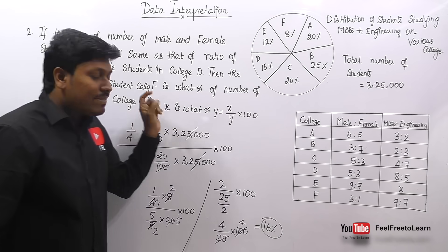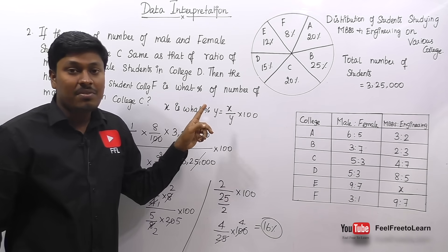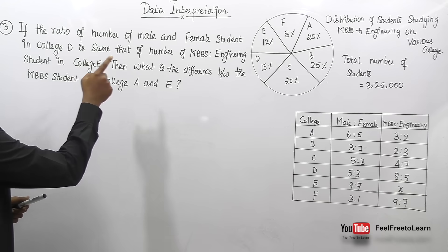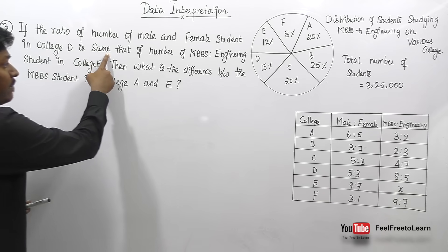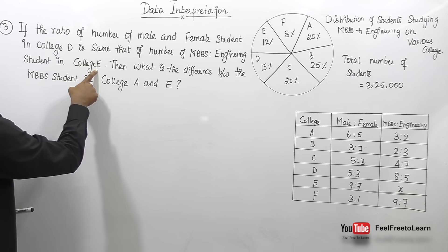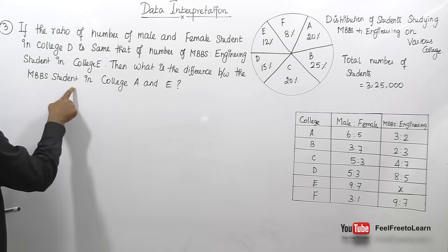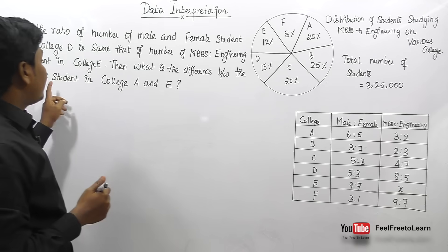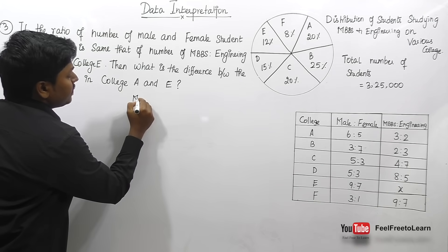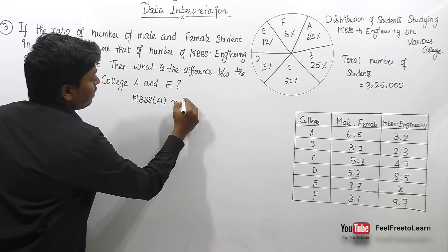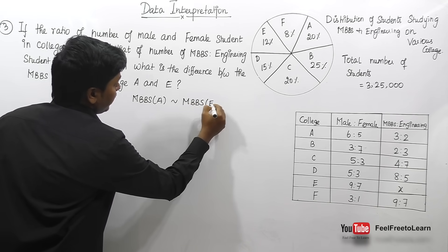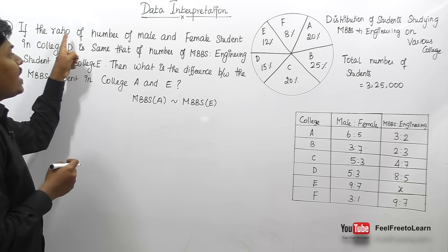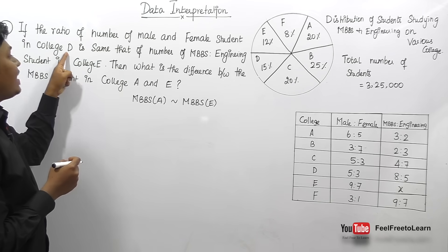Remember: whenever you find 'x is what percentage of y' in a DI question, use the formula x ÷ y × 100. Question 3: If the ratio of male and female students in college D is the same as the ratio of MBBS and engineering students in college E, what is the difference between MBBS students in colleges A and E?